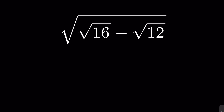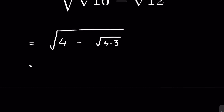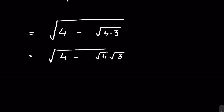We need to simplify the square root of (√16 minus √12). The square root of 16 is 4. We can rewrite √12 as √(4 times 3), which equals √4 times √3.